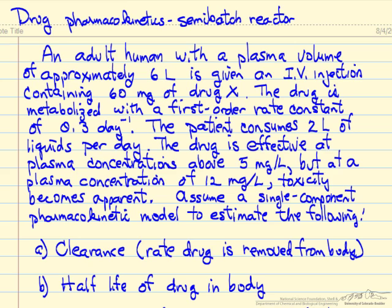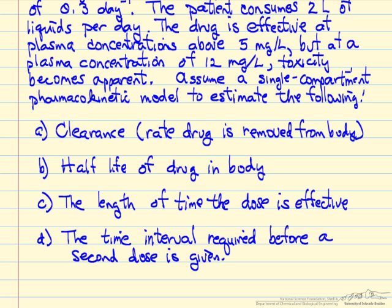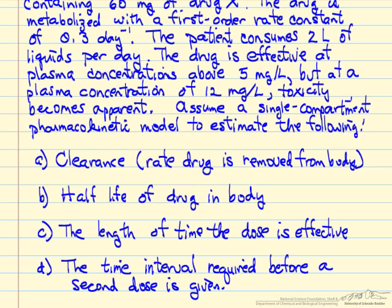We assume a single compartment pharmacokinetic model to estimate the following: clearance (rate drug is removed from body), half-life of the drug, the length of time the dose is effective, and the time interval required before a second dose can be given while staying below the toxicity limit.